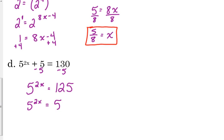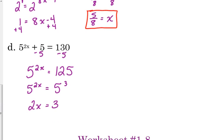125 is 5 cubed. So now they have the same base, so I set their exponents equal to each other. Divide by 2 to solve for x. x is equal to 3 halves.